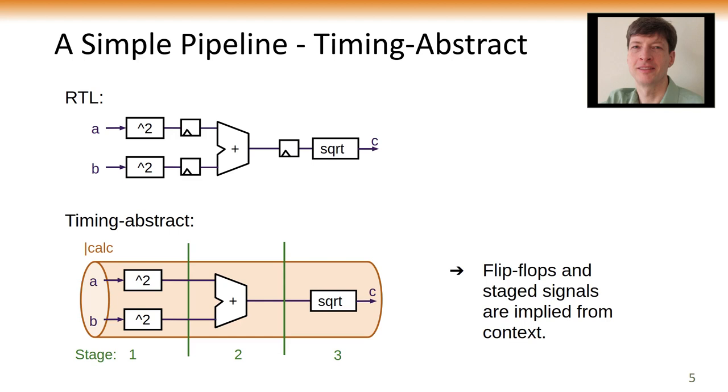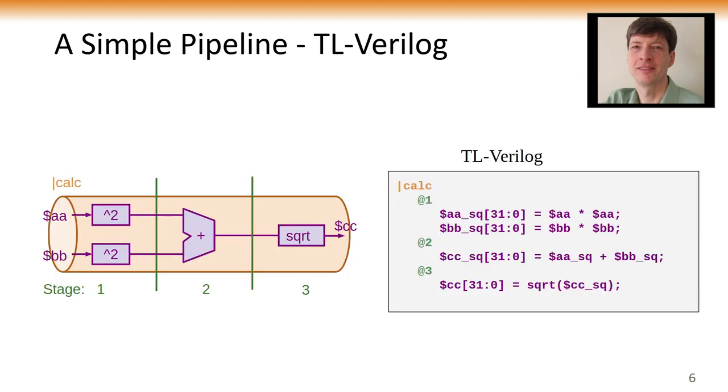You'll notice in this picture that I have not drawn the flip-flops. The flip-flops are implied by the fact that we have signals going from stage one to stage two, or, in this case, we would call these pipe signals, and they represent not just the signal where it's assigned, but that signal in any staged versions of that signal.